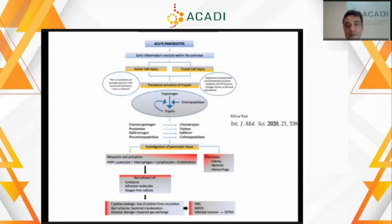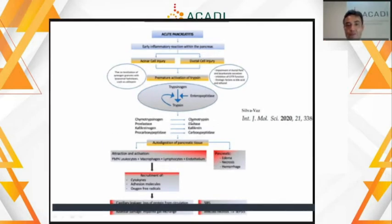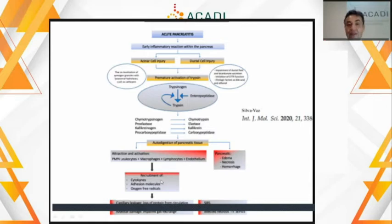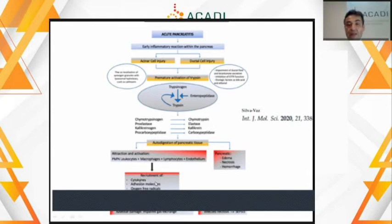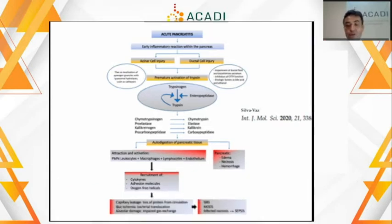La autodigestión del páncreas por la activación anormal de los zimógenos intracinalmente produce un reclutamiento de las células mediadoras de la inflamación, que a su vez liberan en la sangre todo el torrente de citoquinas y moléculas de adhesión que van a generar daños a distancia del páncreas: compromiso pulmonar, renal o cardiovascular, que darán lugar en grados variables de severidad a la disfunción orgánica múltiple, que puede presentarse temprana o tardíamente a lo largo del curso de la enfermedad.